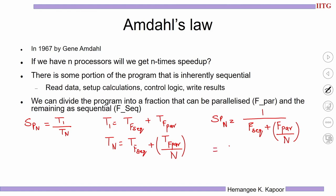Solving further, we replace FSEQ with (1 minus F_parallel). So the denominator becomes (1 minus F_par) plus F_par divided by n. Therefore, the speedup achieved by multi-core is 1 over (1 minus F_par + F_par/n).